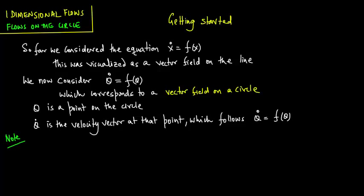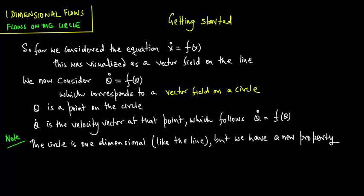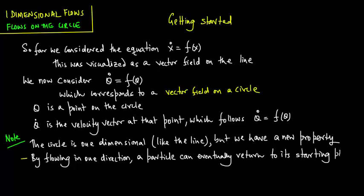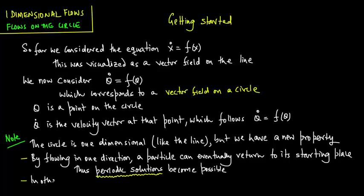Here are some notes. The circle is one-dimensional just like the line, but we have a new property. By flowing in one direction, a particle can eventually return to its starting place. Thus, in effect, periodic solutions actually become possible. In other aspects, flows on the circle are actually quite similar to flows on the line.